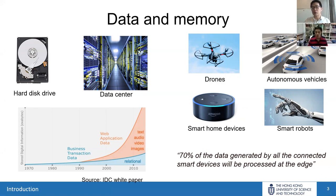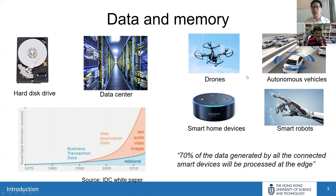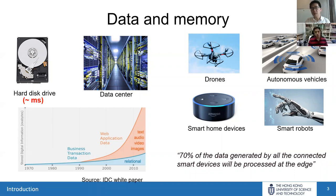In the future, for example, we will have autonomous vehicles. An important thing to notice is that a significant amount of data needs to be processed at edge devices, so we need to put data back to the data center for processing. This kind of transfer gives a lot of delay, which will not be acceptable for time-demanding devices such as autonomous vehicles where safety is the first priority and decisions must be made very fast.